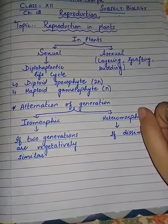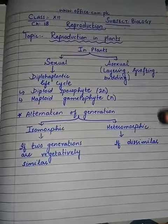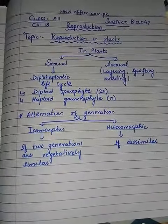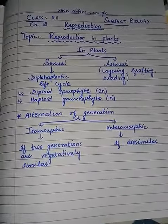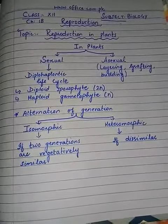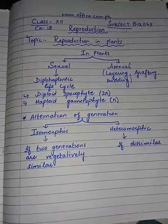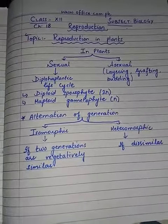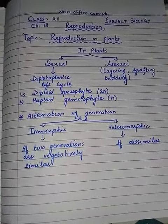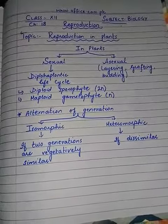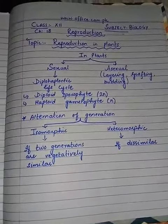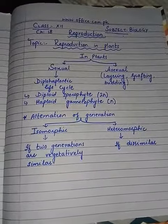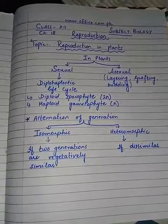Reproduction is very helpful in maintaining a species, because if new generations or new organisms are not produced, then it becomes very difficult for a species to maintain itself, and it will ultimately become endangered or extinct from the earth. We also know that reproduction is of two types: asexual reproduction and sexual reproduction.